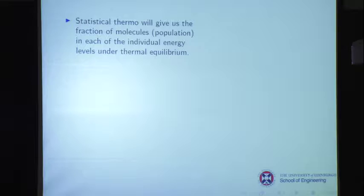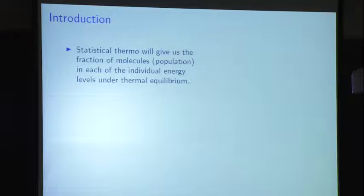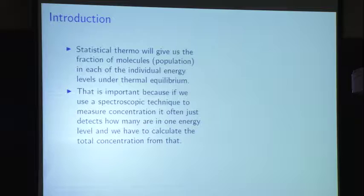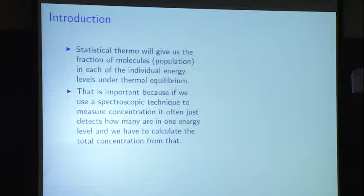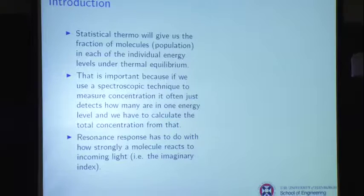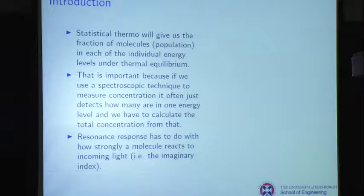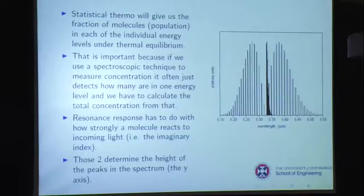I want to talk about resonance response, including the Einstein A coefficient and all the rest of them. That gets at the issue of why we have all these different ways of describing the same thing. Statistical mechanics gives us the fraction of molecules in each of the individual energy levels when it's in thermal equilibrium.